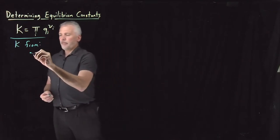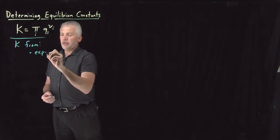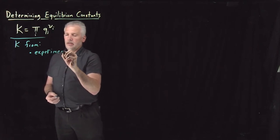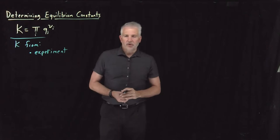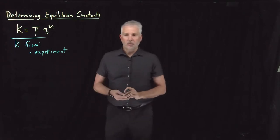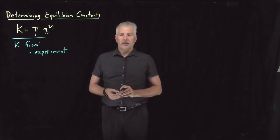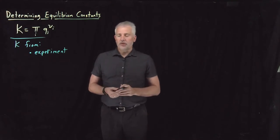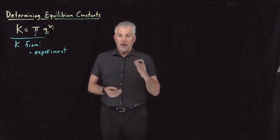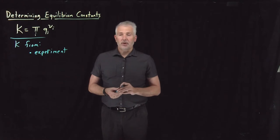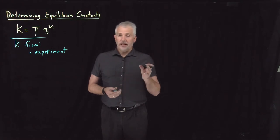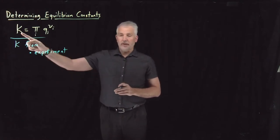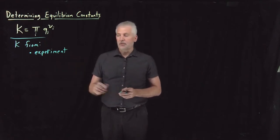We can certainly do an experiment. If we have a reaction we'd like to know the equilibrium constant for, we can throw some reactants and/or products into a container, let the reaction proceed until it reaches equilibrium. If we measure how much of each reactant and product we have, use that to calculate the reaction quotient — which must be equal to the value of K — then we've determined the value of K experimentally.